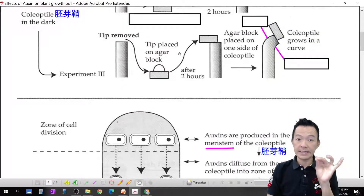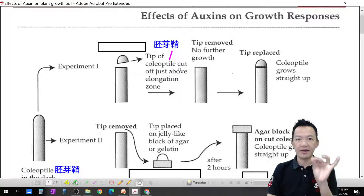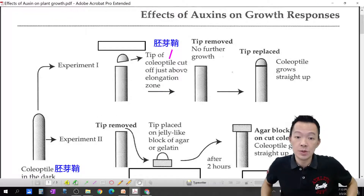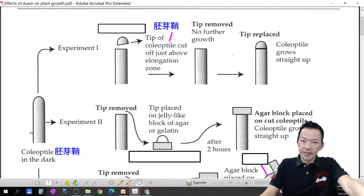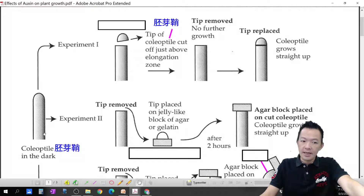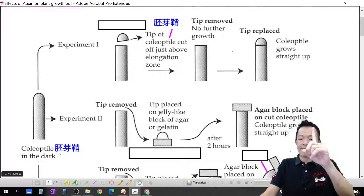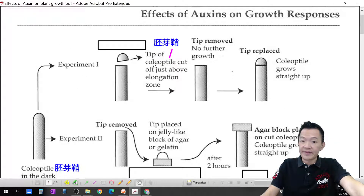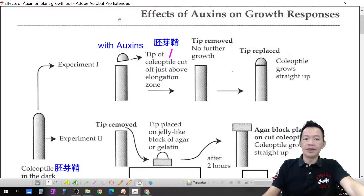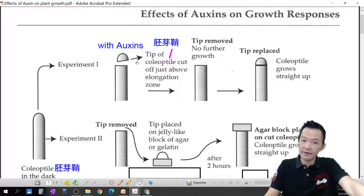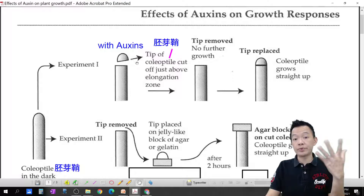Now let's look at a simple experiment to show that auxin actually affects plant growth. This is the shoot of the plant — the tips of the shoots, the coleoptile, kept in the dark. The tips of the coleoptiles are cut off just above the elongation zone. That tip region contains auxin. If you cut it off, there will be no more auxin.